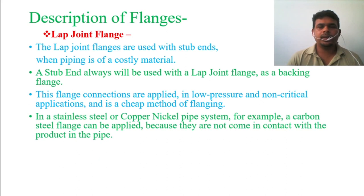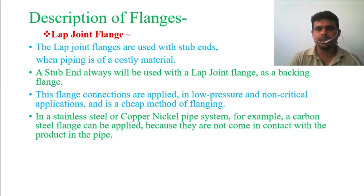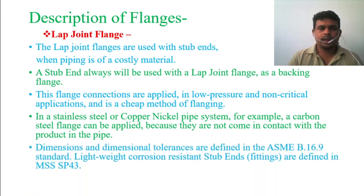For example, in a stainless steel or copper-nickel pipe system, a carbon steel flange can be applied. If your main pipe is stainless steel or copper-nickel, you can use the cheaper carbon steel flanges with the lap joint type, because the flanges do not come in contact with the product inside the pipe. The dimensions and dimensional tolerances for this type of flange are defined in ASME B16.9 standard, and lightweight corrosion-resistant stub-in fittings are defined in MSS SP-43.